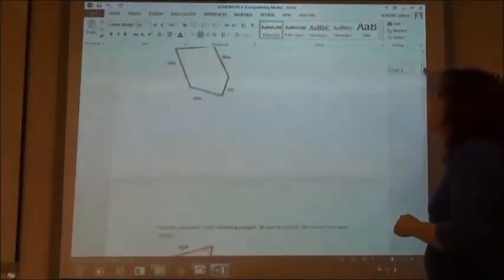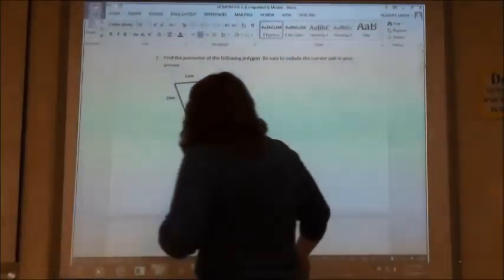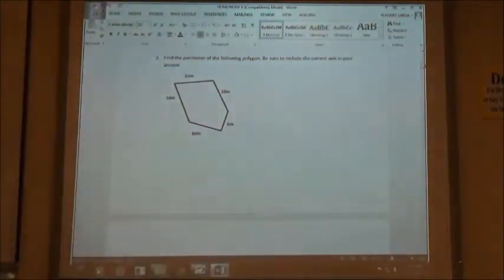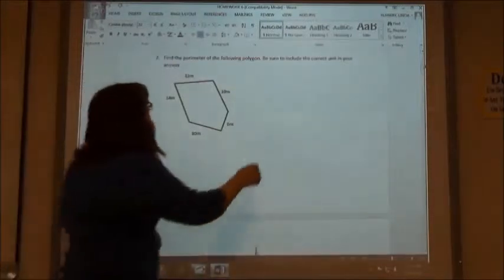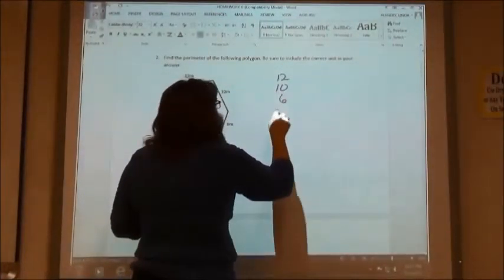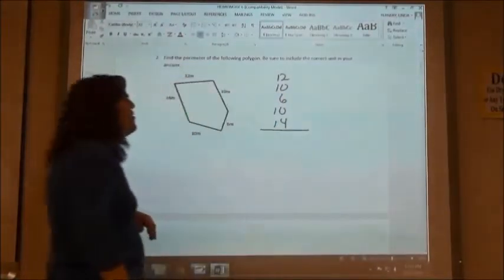So on number two, again, it just wants us to find the perimeter of the polygon, and it says be sure to include the correct unit in your answer. In other words, they want the label on there. So we're going to do 12 meters plus 10 meters, plus 6 meters, plus 10 meters, plus 14 meters, and add all those together.